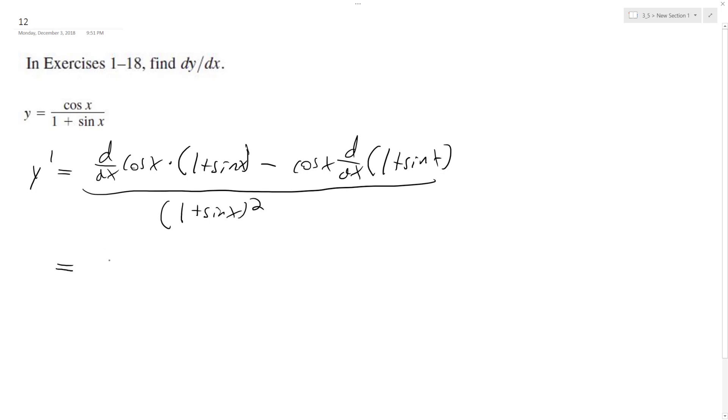All right, so derivative of the cosine of x, negative sine of x times 1 plus sine of x